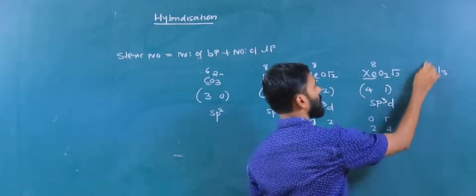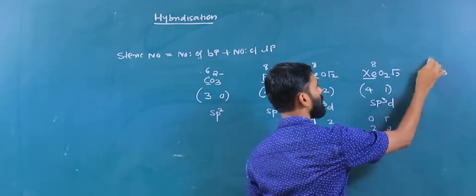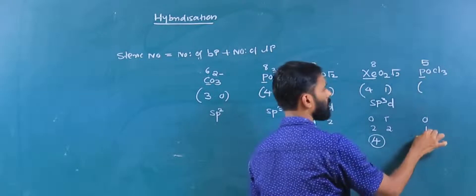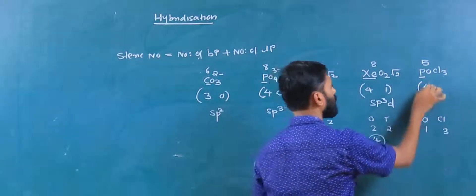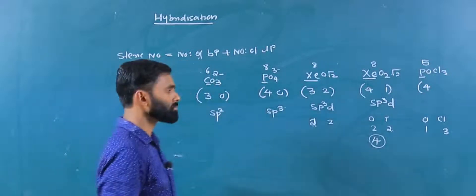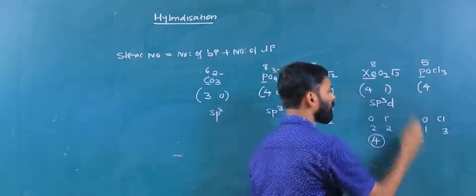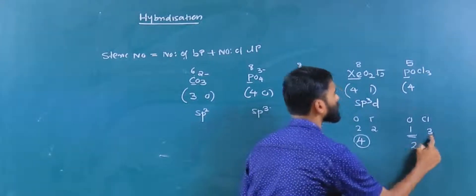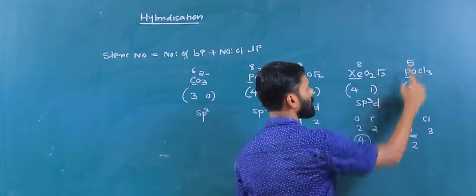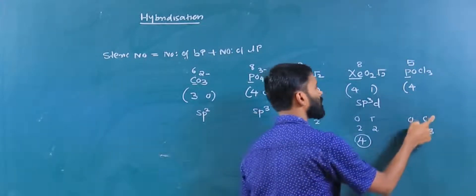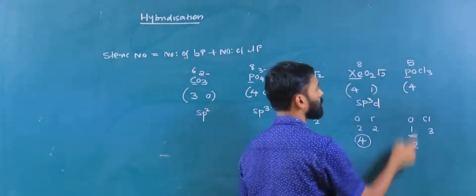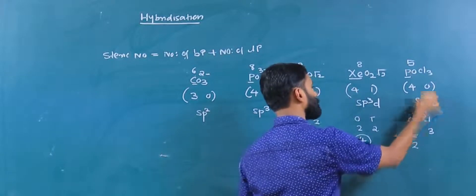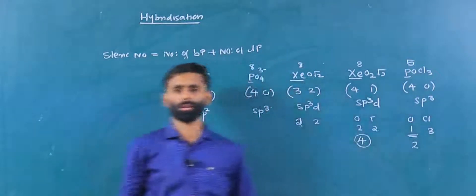POCl3 — phosphorus, group 15, valence electrons 5. Bond formed: oxygen 1 bond (double bond) and chlorine 3 bonds, total 4 bonds. So oxygen contributes 2 bond counts plus chlorine 3, total 5. Calculation: 5 minus 5 equals 0 lone pairs. Hybridization is SP3.